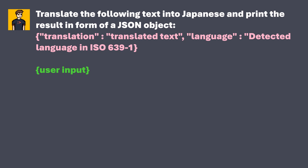The developer's instruction is that the user input should be translated into Japanese and the result must be returned as a JSON object so it can be further processed within the app. The JSON object contains the translation and the language in which the user input was written, represented in ISO 639-1 format.